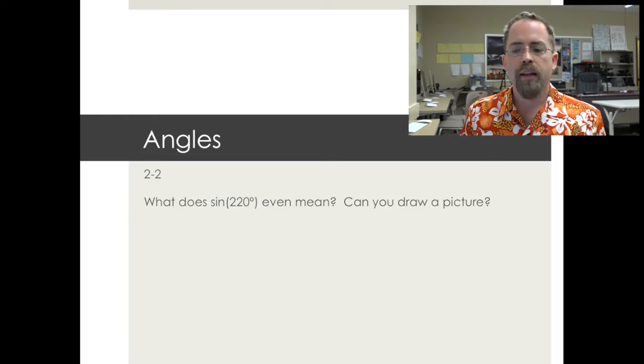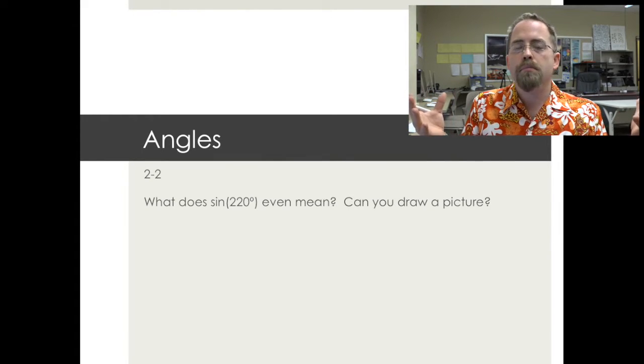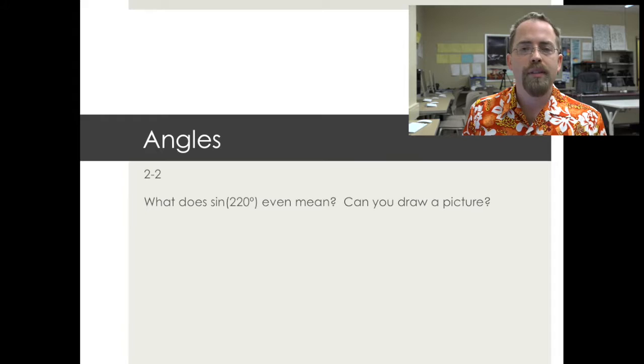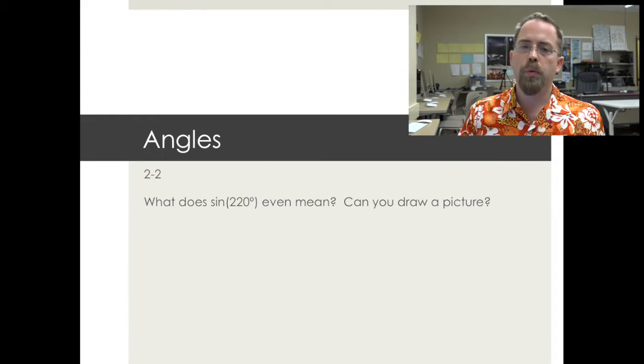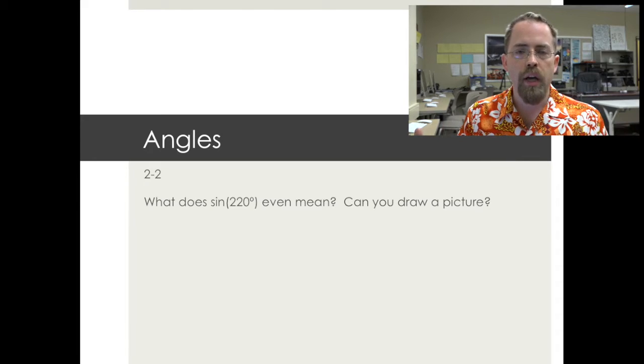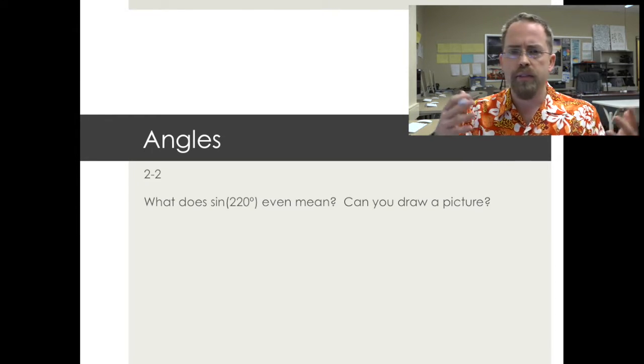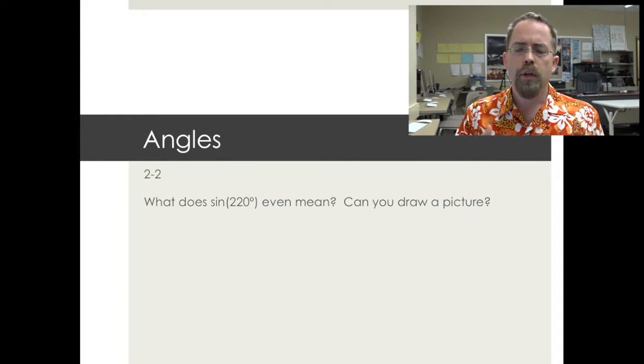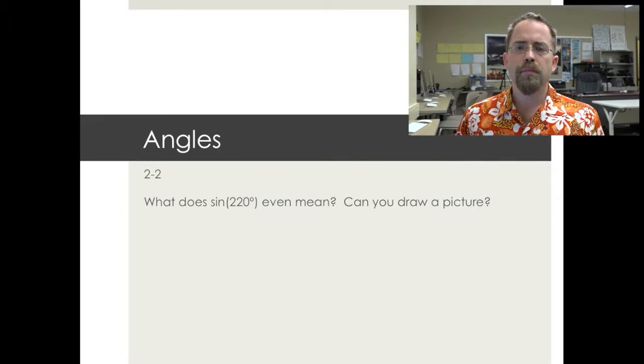Hello class, welcome to the first lecture for chapter 2-2. We're talking about angles, and I have a question for you. What does it even mean to try to talk about sine of 220 degrees? In 2-1 you made some graphs of sine waves, and they kept going forever and ever to the right, past 360, past 180, on and on. What could that even mean?